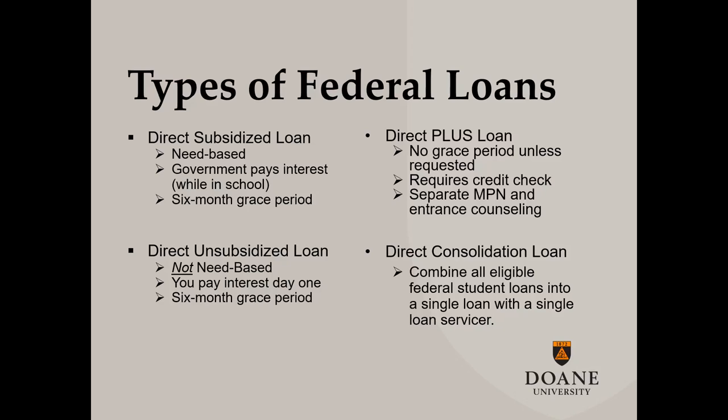The third type of federal student loan is a direct plus, which is taken out by a parent or legal guardian for a dependent undergraduate. The plus loan has a couple of stipulations tied to it, such as a credit check and separate master promissory note. The interest rate also tends to be much higher than the subsidized or unsubsidized loan.